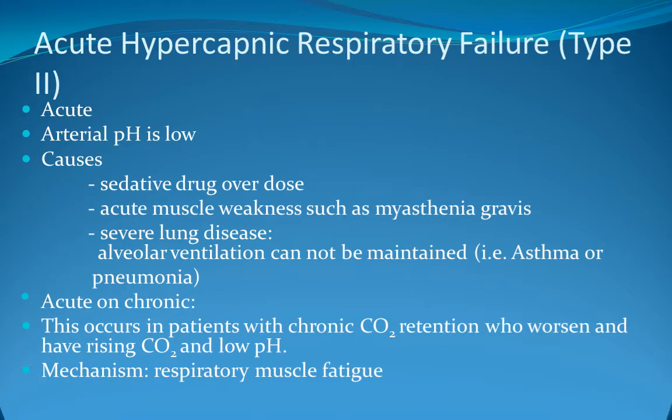Pulmonary causes of type 2 respiratory failure include asthma, COPD, pneumonia, pulmonary fibrosis, and obstructive sleep apnea. Reduced respiratory drive occurs with sedative drugs, CNS tumor, and trauma. Neuromuscular causes include cervical cord lesion, diaphragmatic paralysis, poliomyelitis, myasthenia gravis, and Guillain-Barré syndrome. Thoracic wall disease such as flail chest and kyphoscoliosis can also contribute.